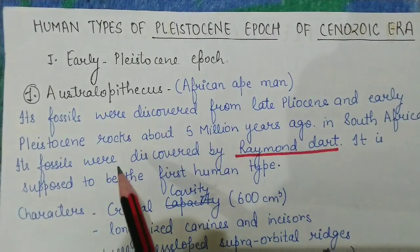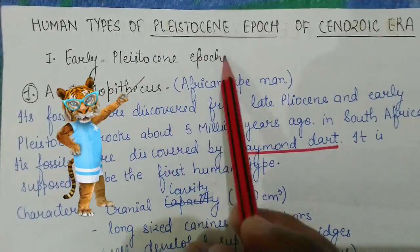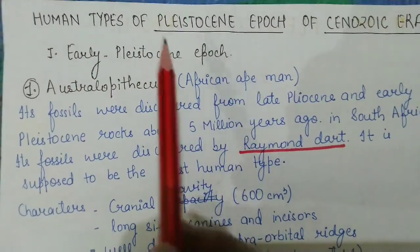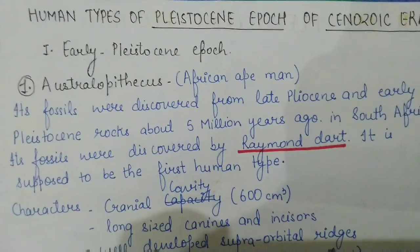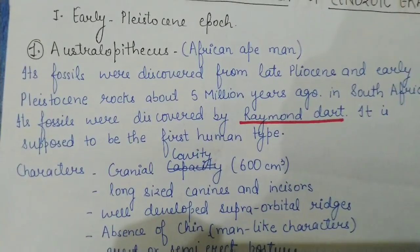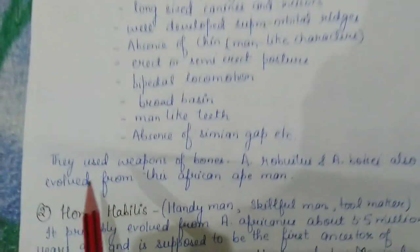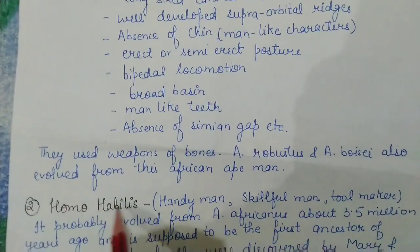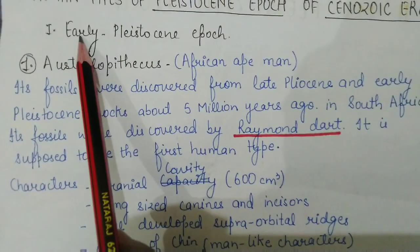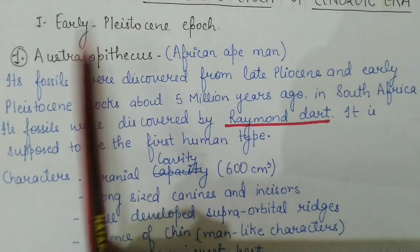So there are three different zones: early, middle, and late Pleistocene Epoch. Starting with the early Pleistocene Epoch, it includes two different species — Australopithecus and Homo habilis. So let's start from the early Pleistocene Epoch.